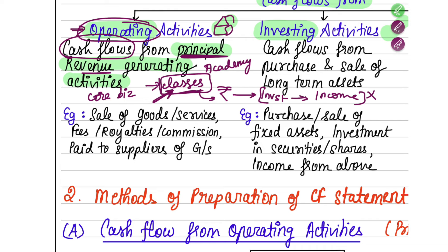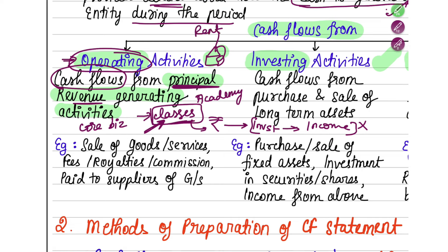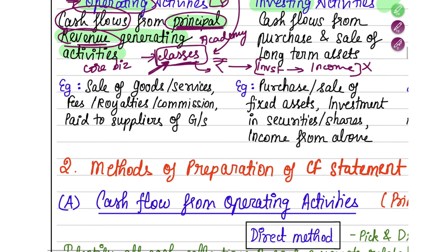Even rent paid for the academy is an operating activity because it is directly related to running the classes — without it, the principal revenue generating activity cannot work. Similarly, sale of goods or services, fees, royalties, and commissions received or paid all come under operating activities because they are directly linked to making the sale.